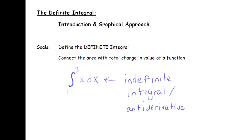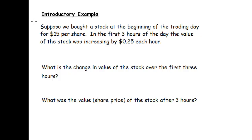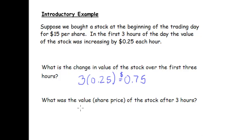To begin, let's look at an example. Suppose we bought a stock at the beginning of the trading day for $15 per share — just one share for now. In the first three hours of the day the value of the stock was increasing by 25 cents each hour. What is the change in value over those first three hours? Each hour it rises by 25 cents per hour, so we take 3 times 0.25, and we know we're going to increase by 75 cents. The value of the stock after three hours is $15 plus $0.75, giving us $15.75.